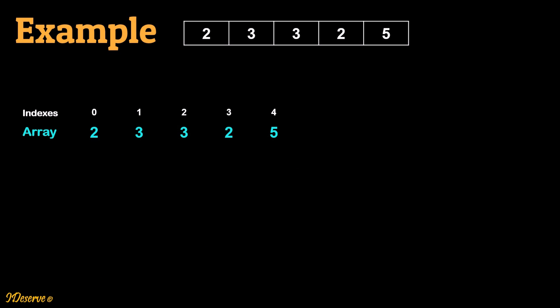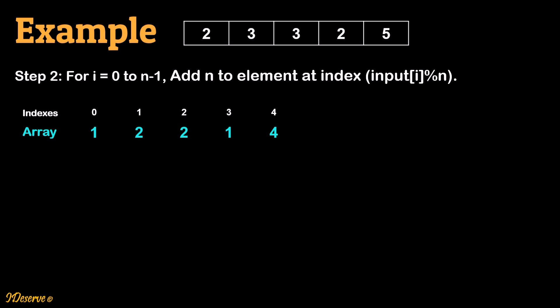Let's take one example to visualize the algorithm. You can also visualize it on our web portal at www.ideserve.co.in — it is highly recommended as it will help you immensely. The first step is to reduce all elements by 1. In the second step, one by one we process each element. Whenever we process the current element, we increment the count by adding n to the element at index input[i] mod n.